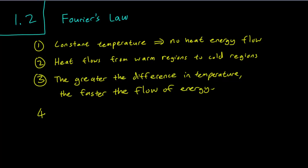The fourth principle is that the flow rate is going to be different for different materials. This makes sense that, for instance, heat will flow through iron faster than it will flow through wood or rubber.